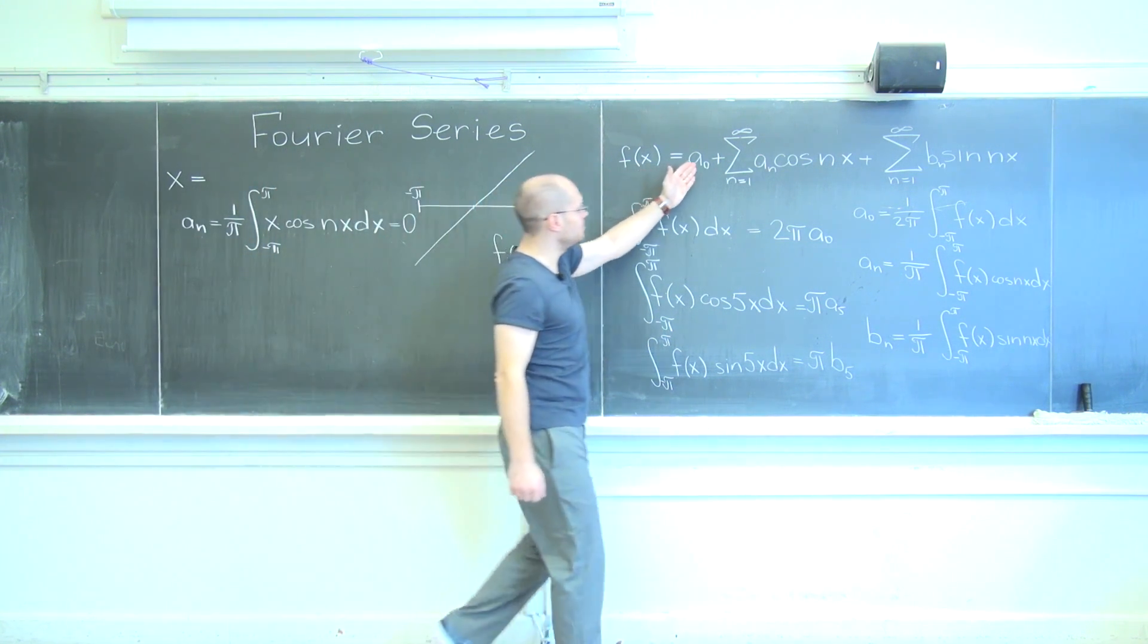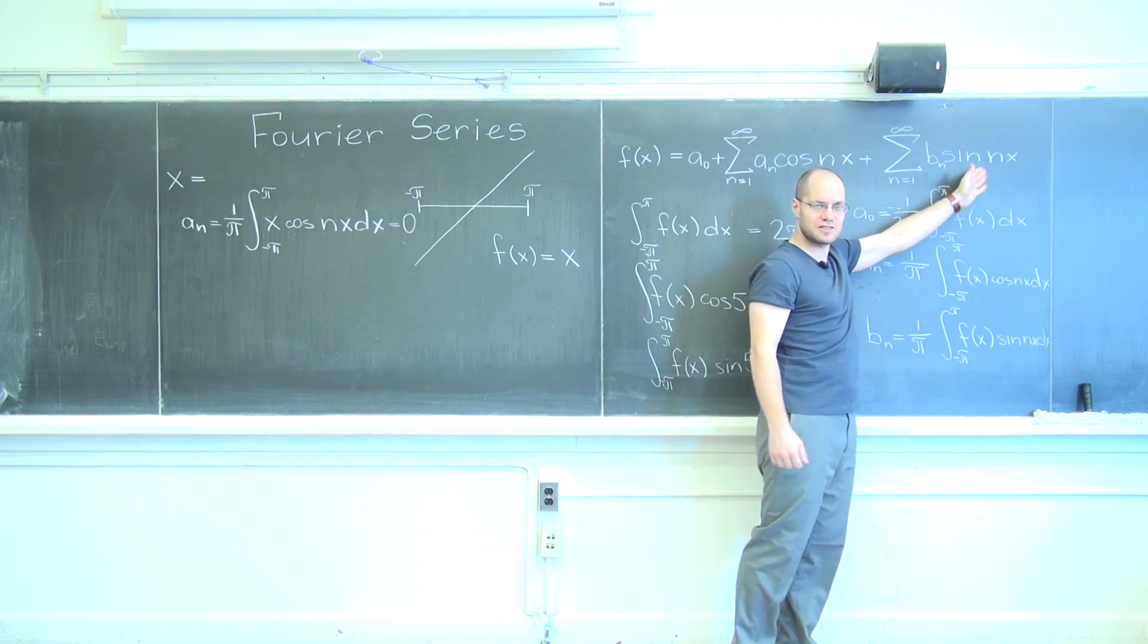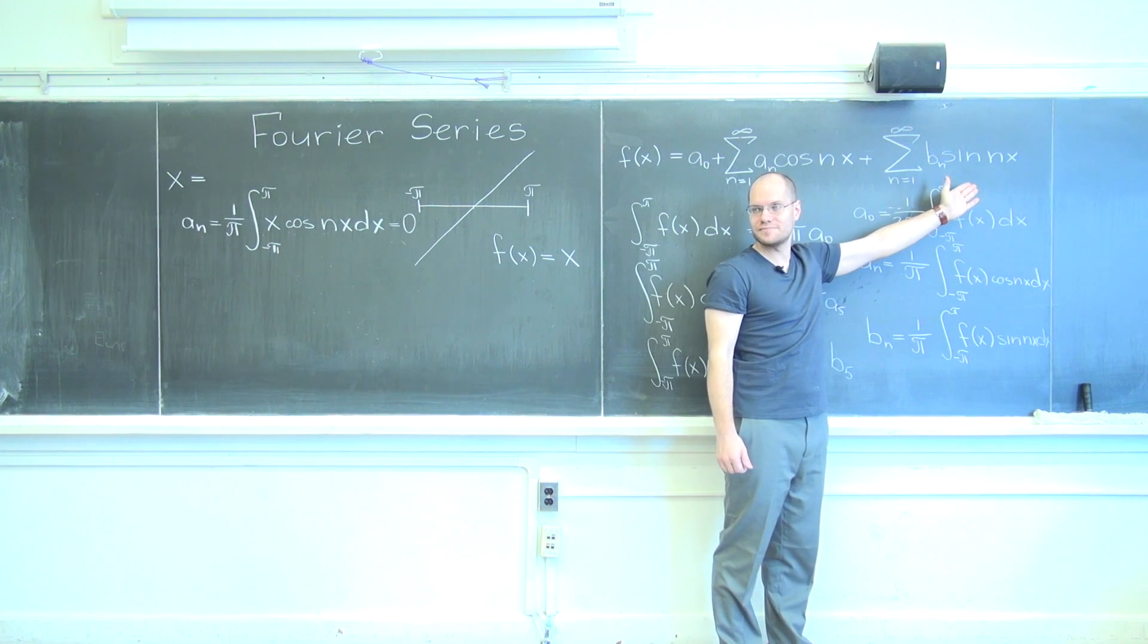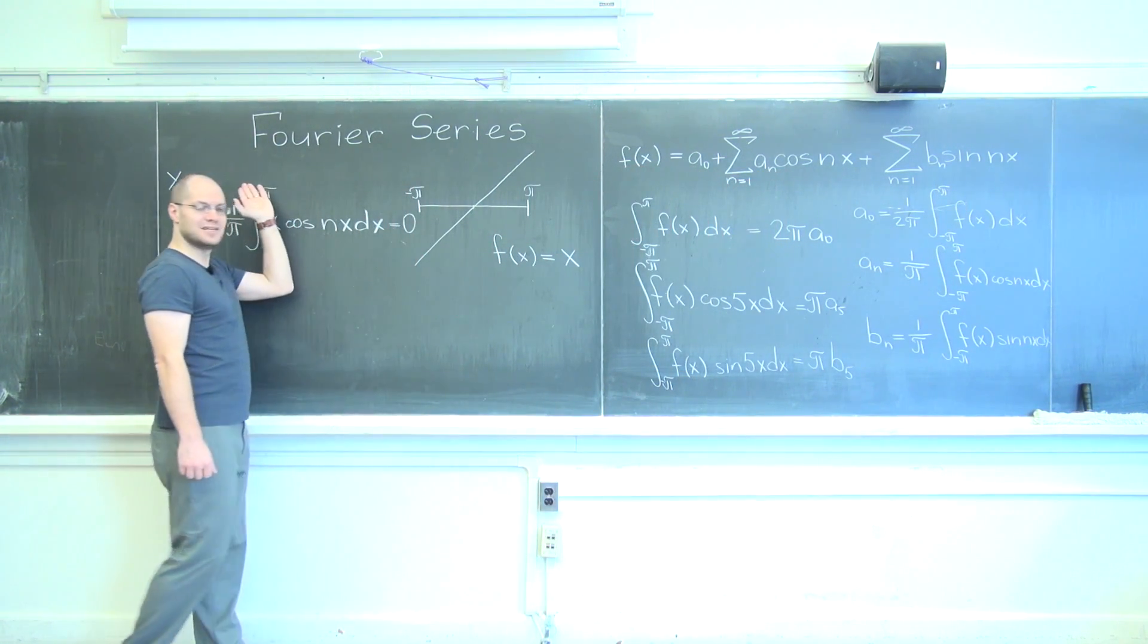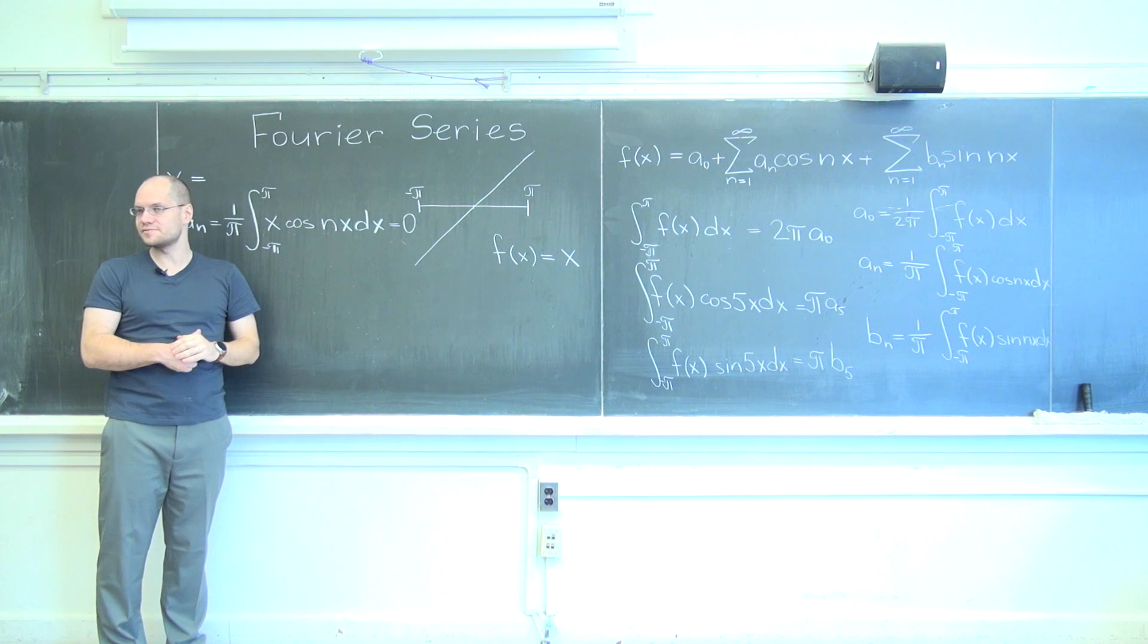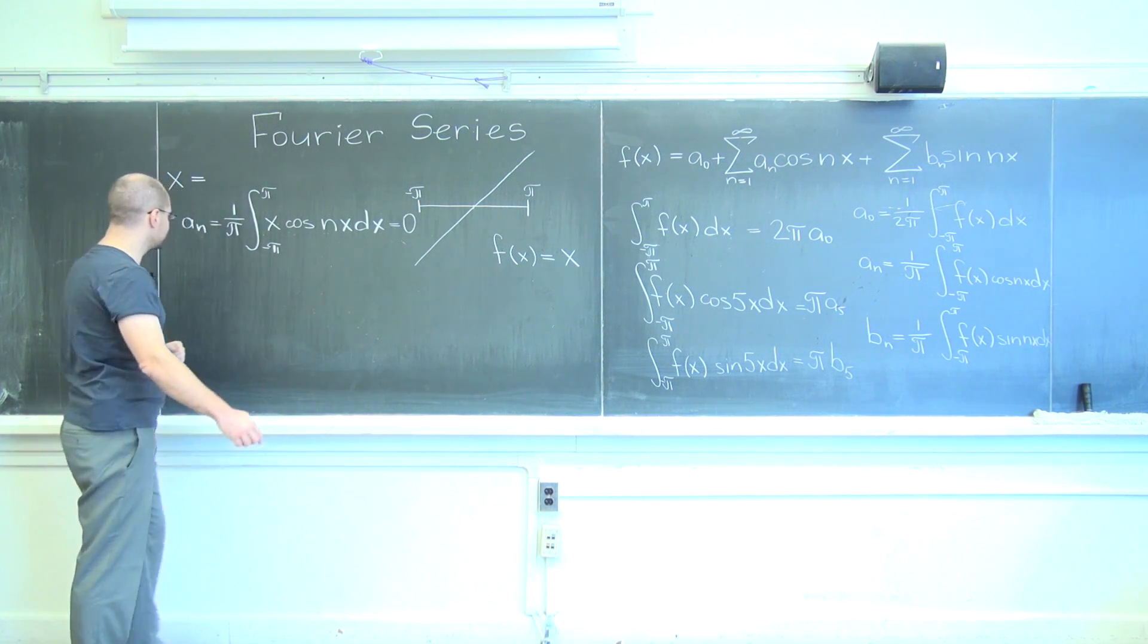X is an odd function, so when you're representing it as a sum of even and odd functions, there will only be odd functions in there. So of course it will be just a sine series.